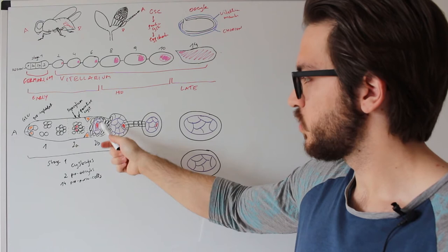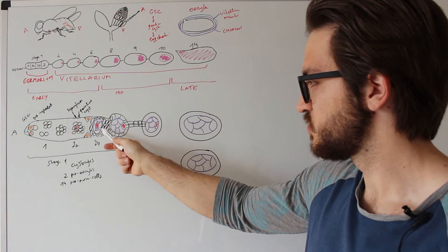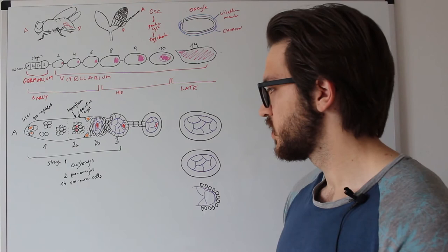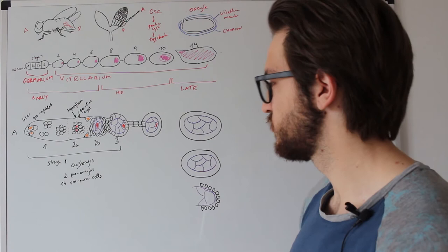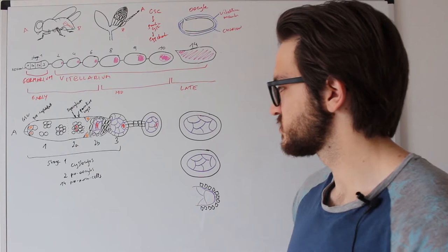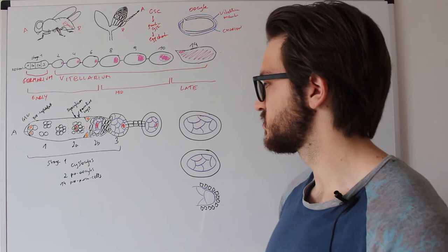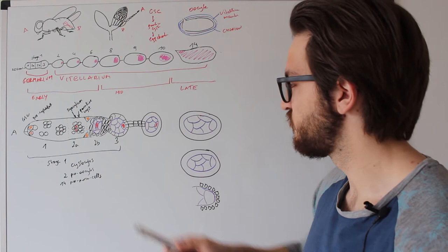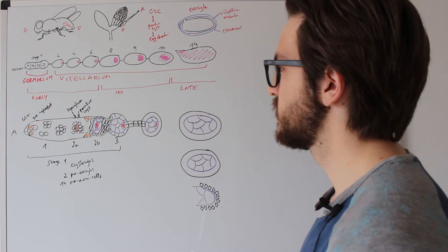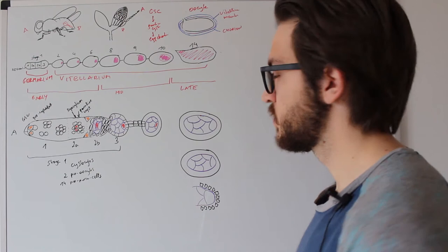In region 2b, there is only one cell in red, because one of the two pro-oocytes will exit meiosis and continue as a nurse cell, while just one cell will continue as the oocyte. So in region 2b we then have one oocyte and fifteen nurse cells. The fifteen nurse cells will produce RNA, proteins, and organelles and ship them into the oocyte. That happens throughout all these stages, but rather slowly. At stage 10, something special occurs which we call nurse cell dumping.